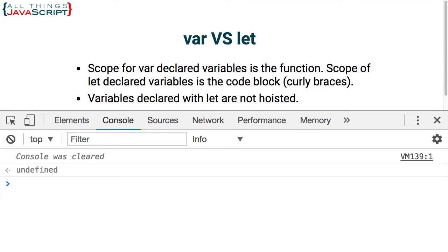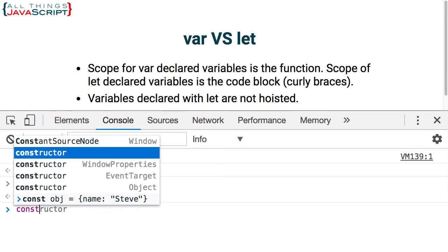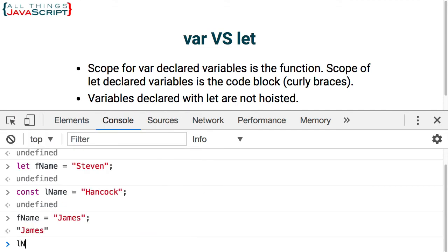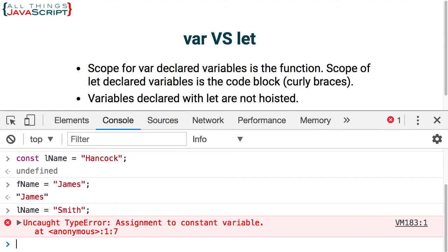Let me open the console and I'll declare two variables. There's one variable, fname — I just declared that with let. Now I'll declare a variable with const: lname. If I try to change fname, I'm allowed to do that. But if I try to change lname to something else, I receive the error. It won't allow me to do that because I've declared it using const. So const communicates making data immutable — but that is not actually true.